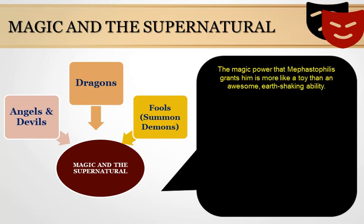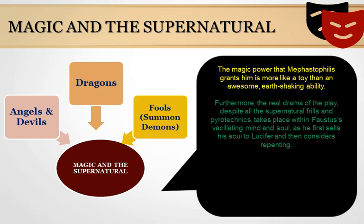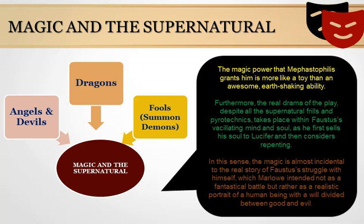The magic power that Mephistopheles grants Faustus is more like a toy than an awesome earth-shaking ability. Furthermore, the real drama of the play, despite all the supernatural pyrotechnics, takes place within Faustus's vacillating mind and soul as he first sells his soul to Lucifer and then considers repenting. In this sense, the magic is almost incidental to the real story of Faustus's struggle with himself, which Marlowe intended not as a fantastical but rather as a realistic portrait of a human being with a world divided between good and evil.